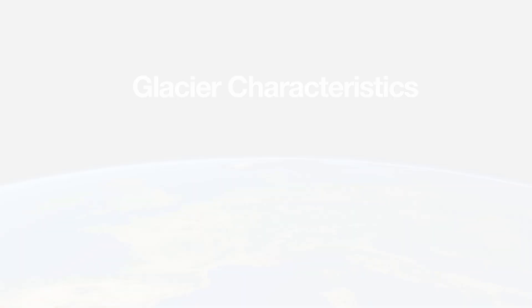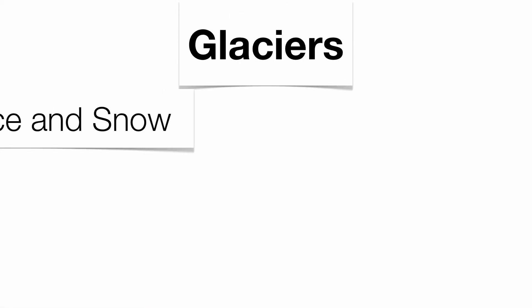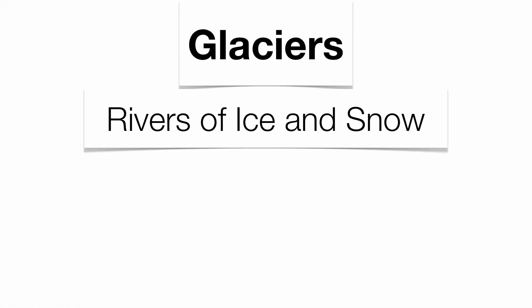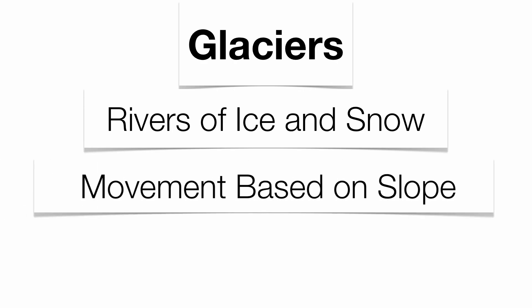Glaciers are a very unique feature here on the planet, very simply because geologists call them rivers of ice and snow. They move very similar to how water flows, and they're all going to be solely based upon the slope of the land. The steeper the slope, the faster the movement of this ice and snow.